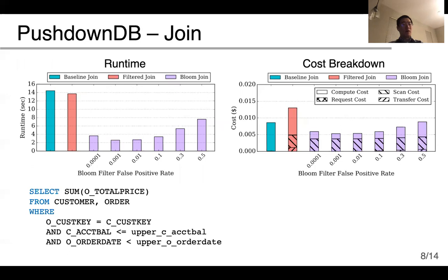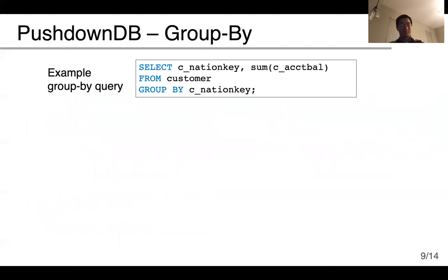We compare the runtime and cost of all three join algorithms using the SQL query at the bottom of this slide. For bloom join, we sweep the false positive rate of the bloom filter. For query cost, we show the breakdown across different categories, including compute cost of the virtual machines, cost of sending S3 requests, and the costs of scanning and transferring data using S3 Select. For this particular query, with a false positive rate of about 0.001, we get the maximum speedup and cost reduction.